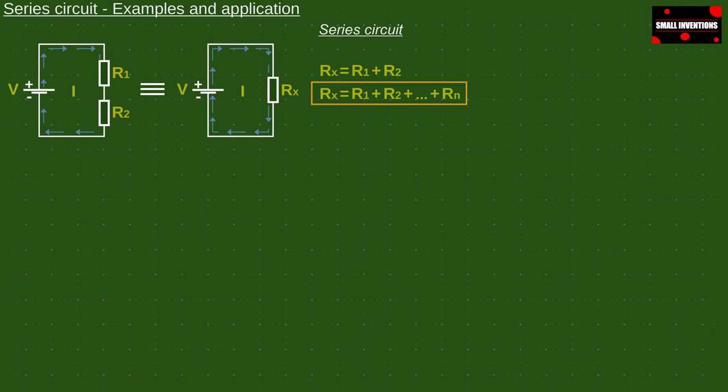Now that we know the total resistance, we use Ohm's law to calculate the current of the series circuit. If you don't know how Ohm's law works, watch my video about it first. The link is in the video description.